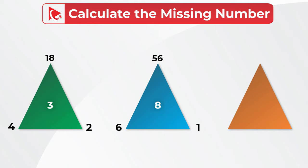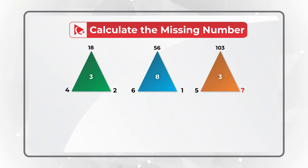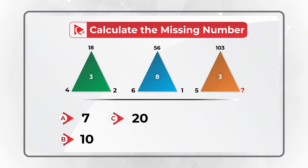The second triangle has outside numbers 6, 56, and 1, and has 8 in the middle. The third triangle has number 3 in the middle, and numbers 5 and 103 on the outside. In the upper right corner of the third triangle, you have a missing number, which you need to calculate from 4 different choices: A is 7, B is 10, C is 20, and D is 30.